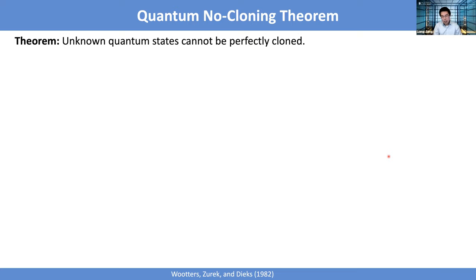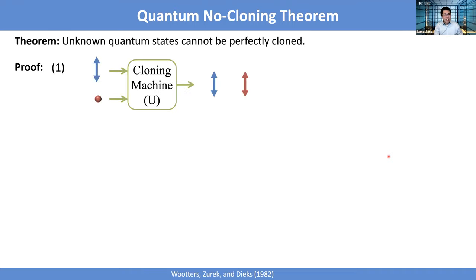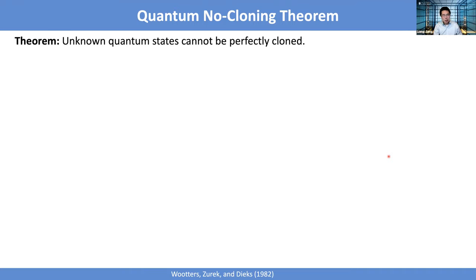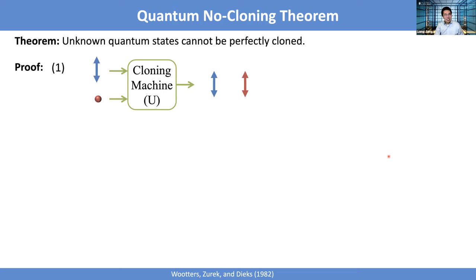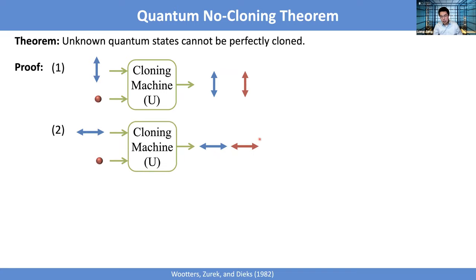You can actually prove no-cloning in three lines. Even though we know how to clone a sheep, we cannot clone a single quantum state. The proof is by contradiction. Suppose we have a cloning machine that can duplicate any single photon state. If I put in a vertical polarization photon, it gives two vertical polarization photons as output. If I have a horizontal polarization photon, it gives two horizontal polarization photons.